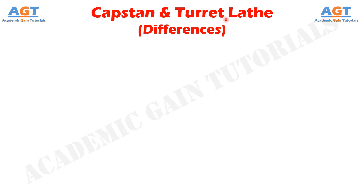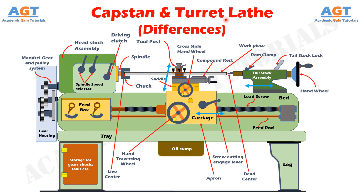A lathe is a machine used to do various operations such as drilling, boring, knurling, thread cutting, facing, etc. on the workpiece to make it a value-added product. In classical lathe machines such as the center lathe, there is only one tool post and only one tool fitted in the tailstock, which usually takes time while changing tools for different operations.